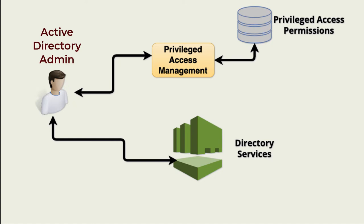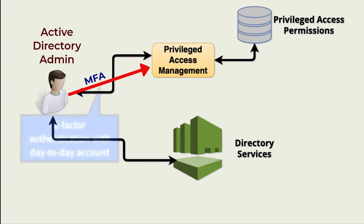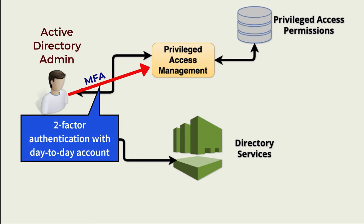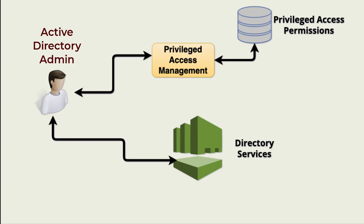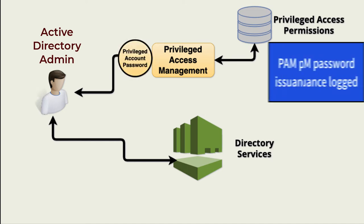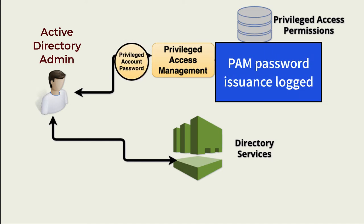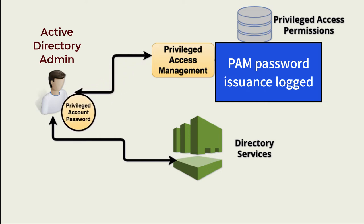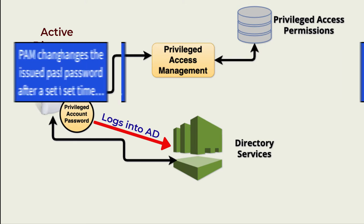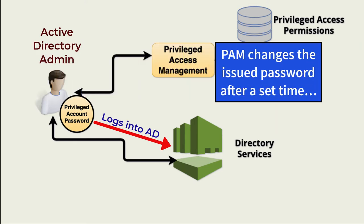Our admin needs to access directory services to add new users. First, he logs into the PAM system using two-factor authentication assigned to a unique personal account — his day-to-day account. He then requests credentials for access to directory services. The PAM system provides the necessary credentials, sometimes just a temporary, very strong password, and logs the credential issuance event. The admin uses the credentials to log into directory services to make his changes. Meanwhile, the PAM system changes the directory services password so that not even the admin can reuse the old password to access directory services.